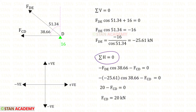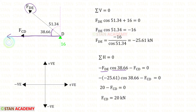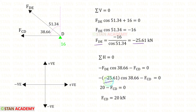Let us apply Sigma H = 0 and find FCD. FCD is acting towards the left side, so it will be negative. FDE is inclined; we have to resolve it in the horizontal direction. To make it horizontal, we need 38.66°. So with FDE, we have to multiply cos 38.66°. It will be acting towards the left side, so it will be negative. Negative into negative will become positive. We can apply the value of FDE. For FCD, we will get 20 kN.